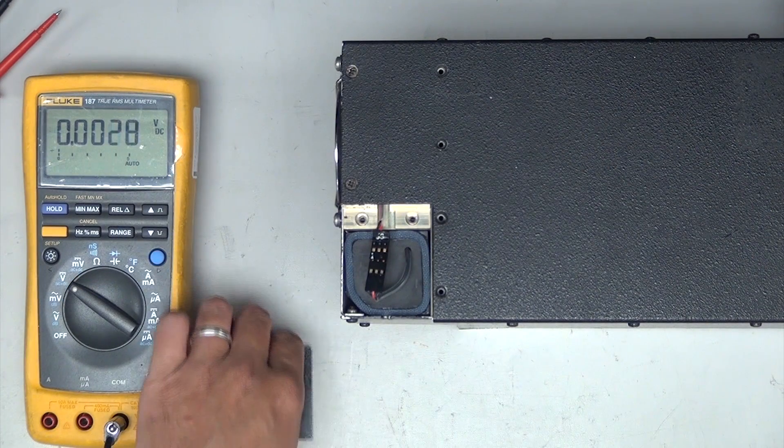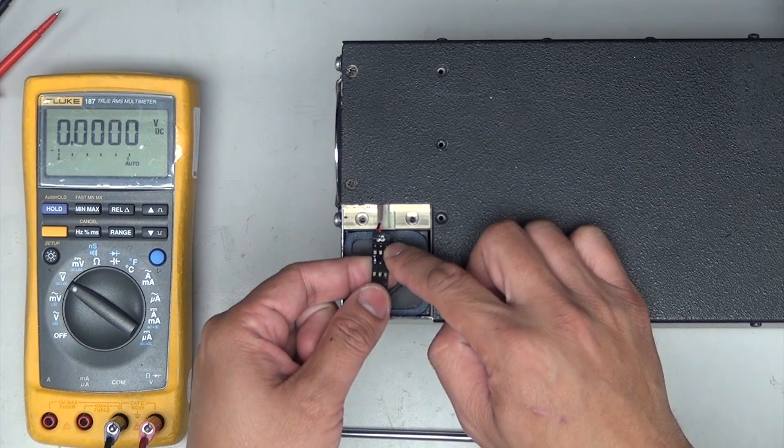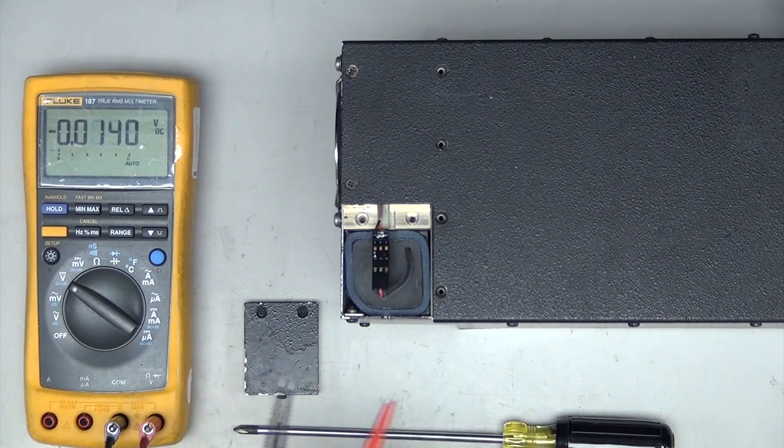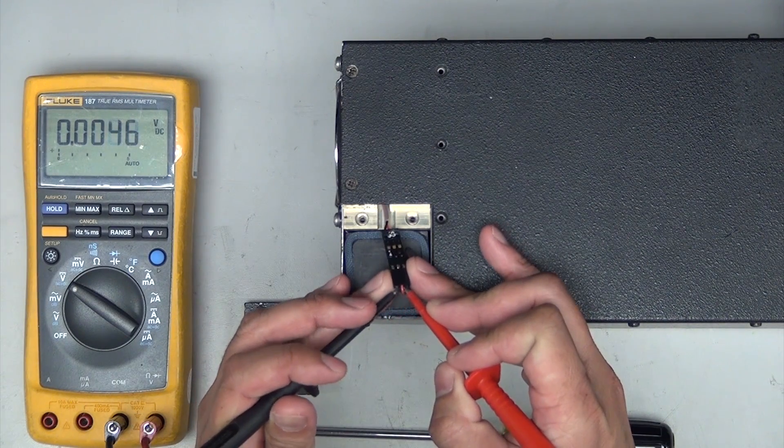Locate the small connector connected to the battery. Probe the connector contacts and measure the battery voltage while under load.